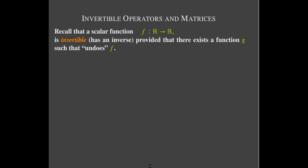We know about invertible functions from basic algebra. If you have a function f and there is another function g which will undo the function f, we call that function invertible.